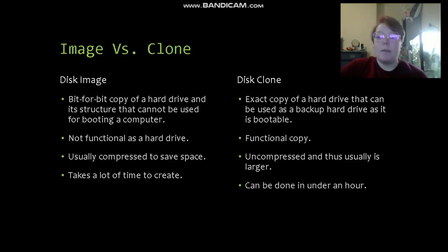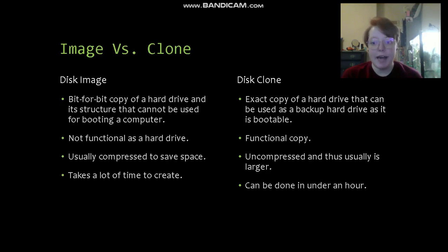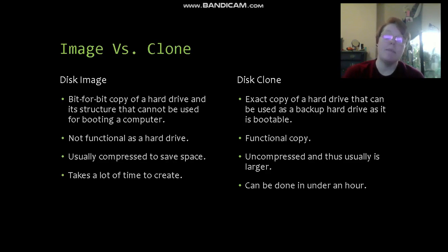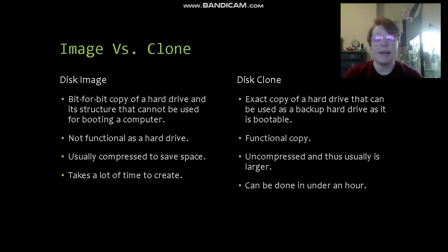Before we get into talking more about disk images, I want to discuss something called a disk clone. These are often mixed up, and I want to go through the differences to highlight truly what a disk image is. A disk image is a bit-for-bit copy of a hard drive or optical drive and its structure, but it cannot be used for booting a computer. It is not functional as a hard drive because it does not have the same structure as what was originally copied — it simply copies the data of the structure. An image is usually compressed to save space and usually omits unused space.